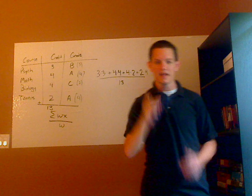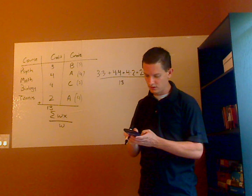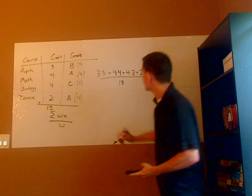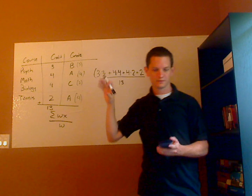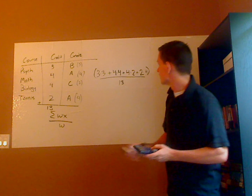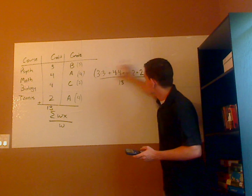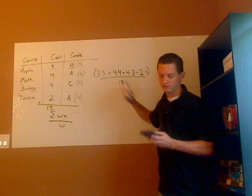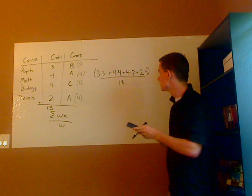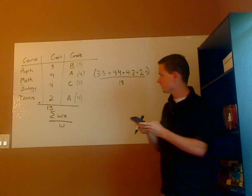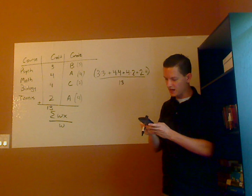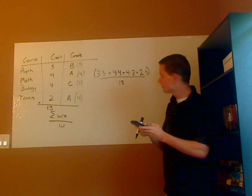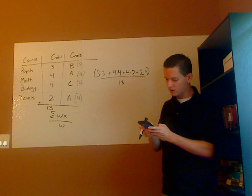So type that on your handy dandy calculator. I'm going to type it all in at once, and I'm going to put parentheses around the numerator using a scientific calculator, because I want this summation divided by thirteen. So that would be: three times three, plus four times four, plus four times two, plus two times four, close parentheses, and then divide by thirteen.